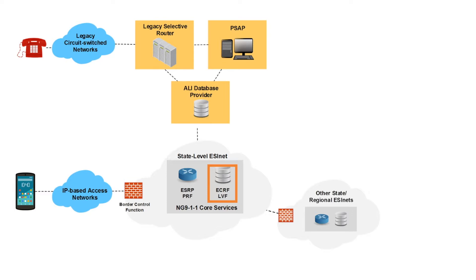The Border Control Function, or BCF, provides security for the ESINet by inspecting all traffic entering and exiting the network, monitoring for potential security issues, and blocking malicious traffic that would prevent emergency calls from being delivered.